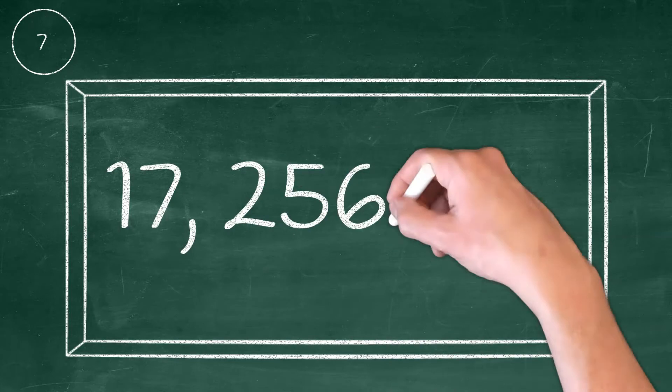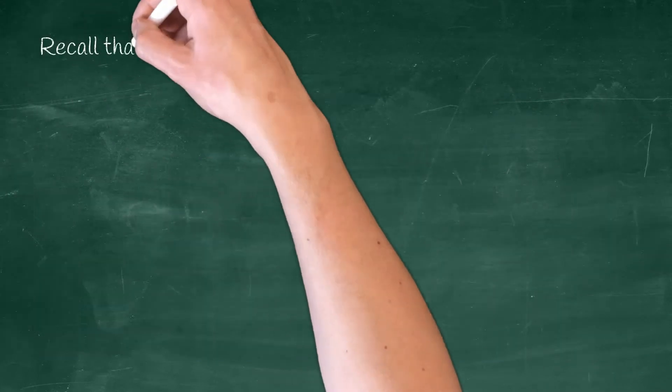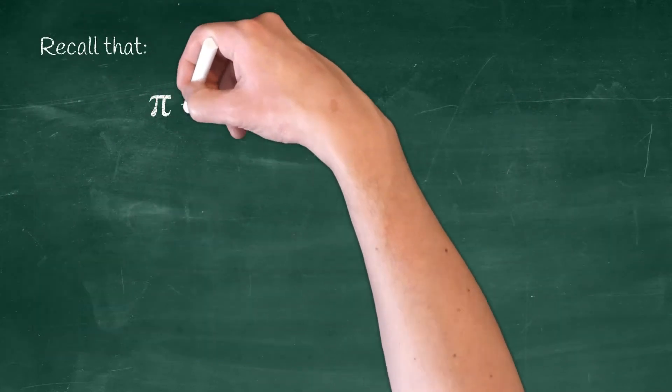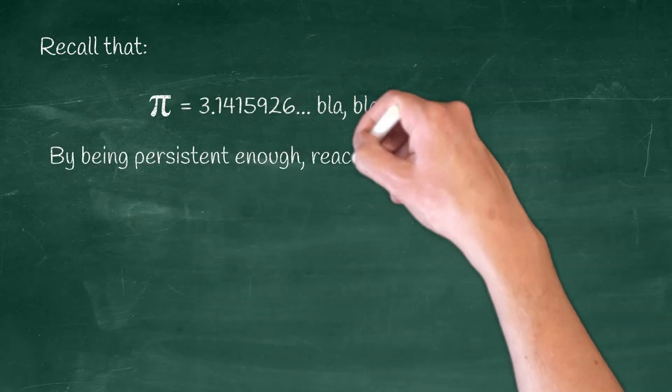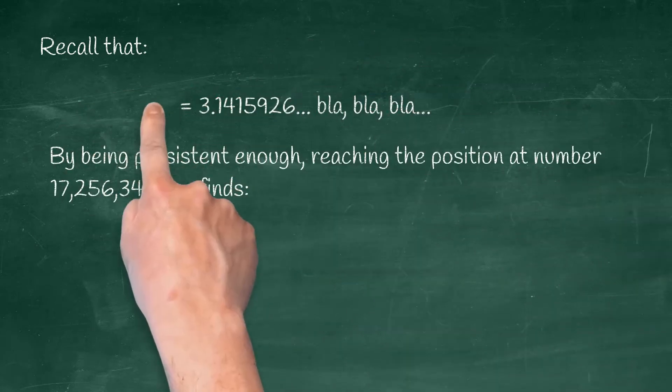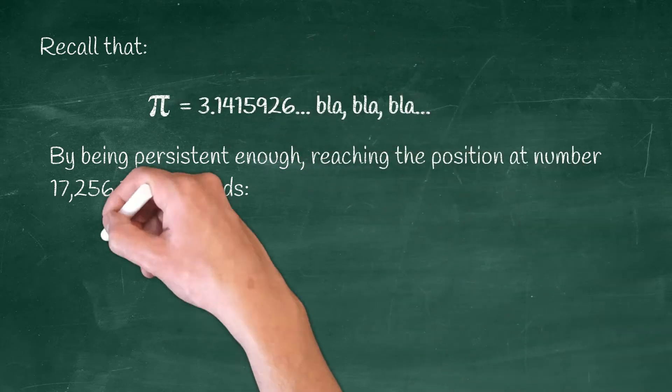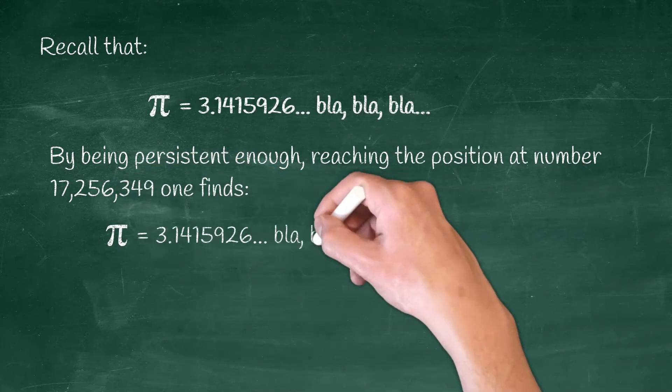17 million, two hundred fifty-six thousand, three hundred forty-nine. I like this number because that's the location in the decimal expansion of pi where my birthday first appears. It's sort of like my pi birthday. But enough about me, it's about the numbers.